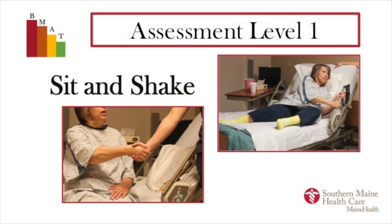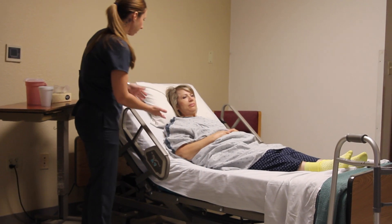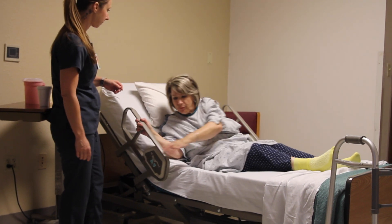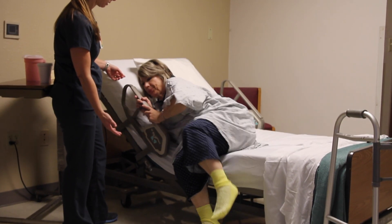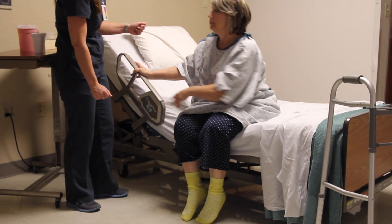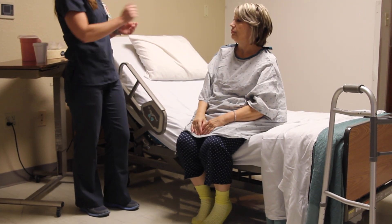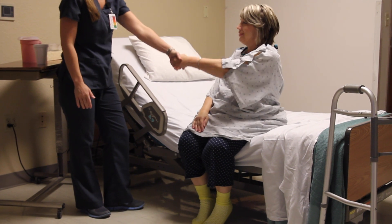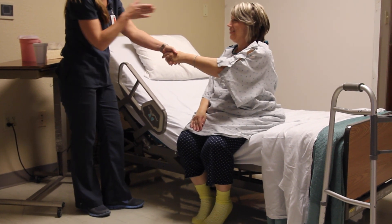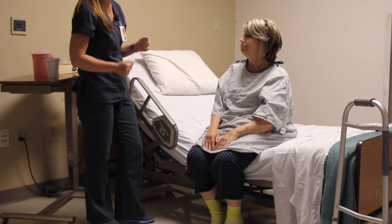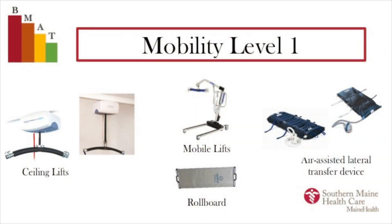Assessment Level 1: Sit and Shake. Ensure your patient is able to follow directions. Ask your patient to come to the side of the bed, using the handrail if needed, but do not offer physical assistance. Next, ask your patient to reach across midline to shake your hand, assessing for seated balance. If your patient is unable to complete the tasks of Assessment Level 1, your patient is considered Mobility Level 1.